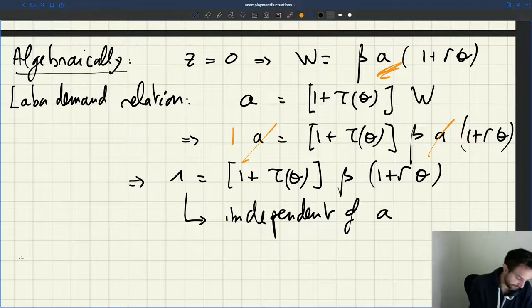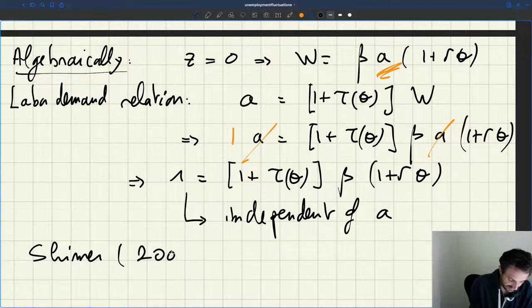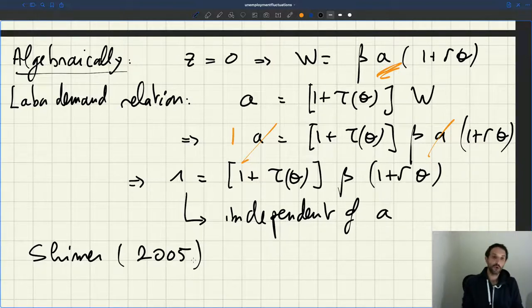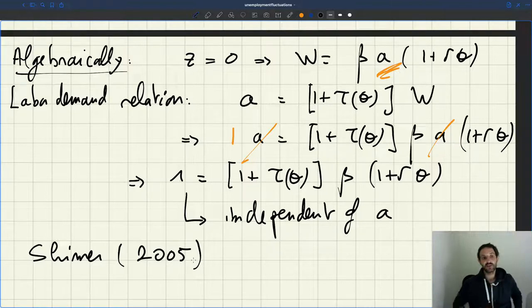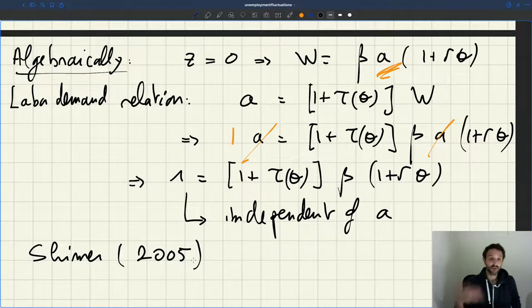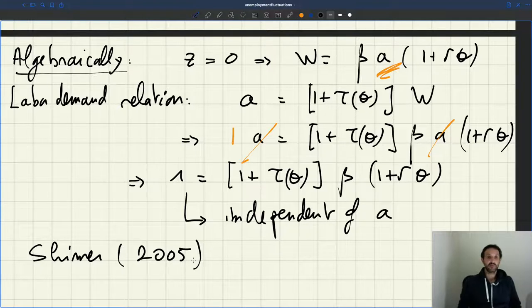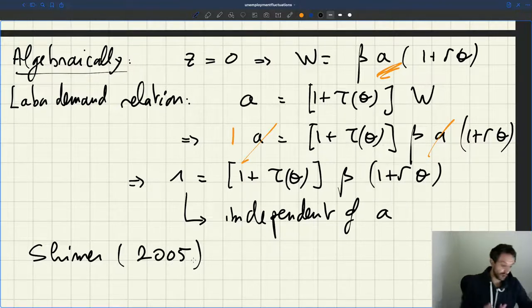So it means that productivity can change as much as you want. In fact, output is going to change because even if employment is fixed, there's higher productivity, you'll have higher output, but tightness is not going to change, employment is not going to change. In fact, the Shimer paper, 2005 in the AER, made that point, although in a slightly more subtle way. That paper didn't set Z equals 0, instead it tried to set Z to a realistic value, which was set in that paper to 0.4. Now when Z equals 0.4, there are some fluctuations in unemployment and vacancies and tightness, but they are very small actually, much below what we see in the data.